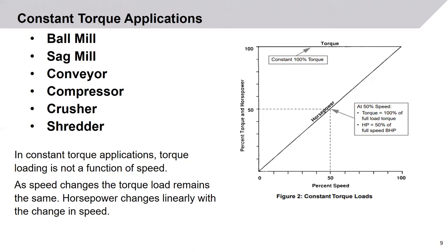Constant torque applications include ball mills, sag mills, conveyors, compressors, shredders, and crushers. In constant torque applications, torque is not a function of speed — as speed changes, the torque load remains the same. Horsepower changes linearly with change in speed.